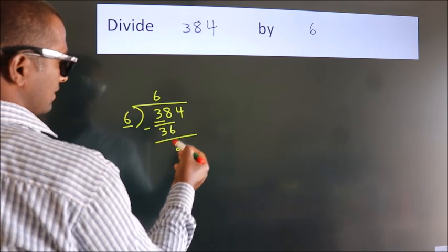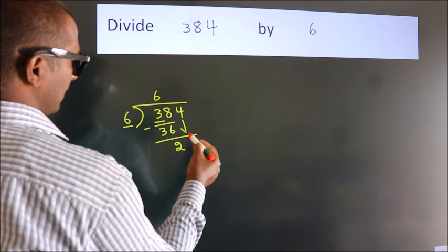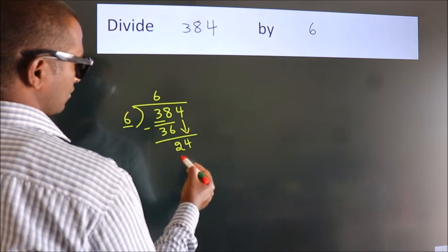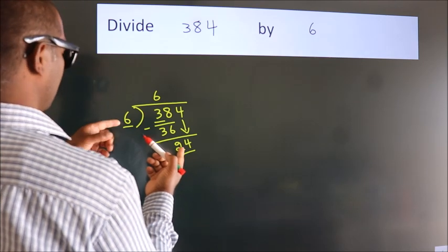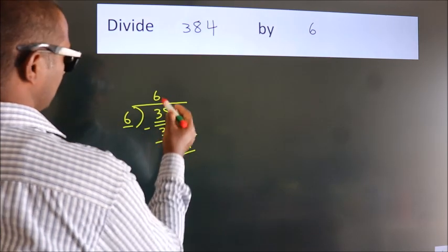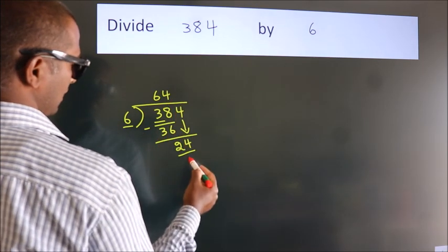After this, bring down the beside number. So 4 down, so 24. When do we get 24? In 6 table, 6 times 4, 24.